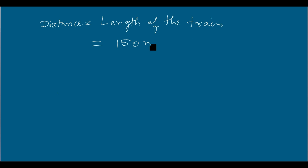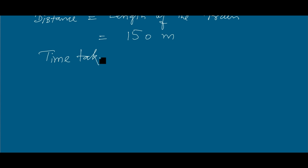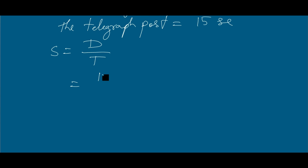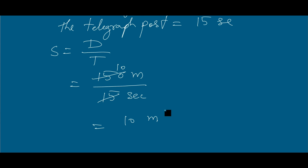When a train crosses a point object like a telegraph post, the distance is equal to the length of the train. The time taken by the train to cross the telegraph post is 15 seconds. Using speed equals distance divided by time, speed equals 150 meters divided by 15 seconds, which gives 10 meters per second.